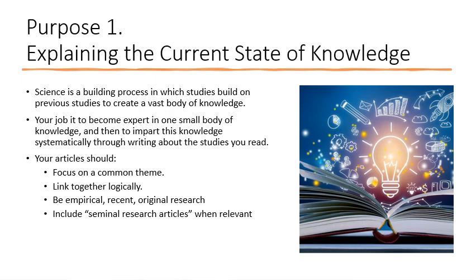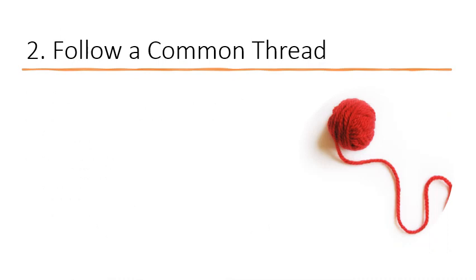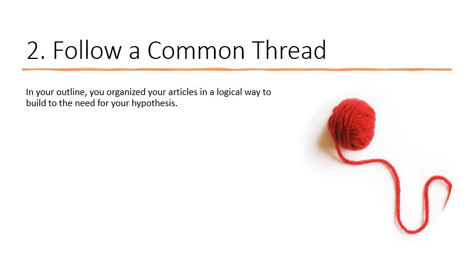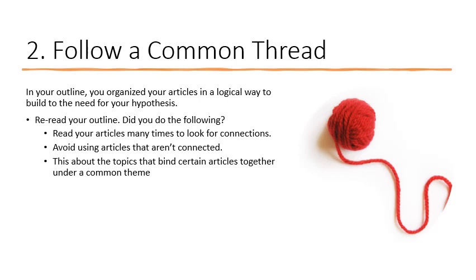Include seminal research articles when they're relevant — those groundbreaking articles that advanced a new theory. For example, it may be important to include the original bystander effect study even though there's been abundant research since then. You also want to continue following that common thread. Reread your outline and ask: Did you read your articles more than once so that you can connect them logically? Did you avoid using articles that aren't relevant? Think about topics that bind certain articles together under a common theme.